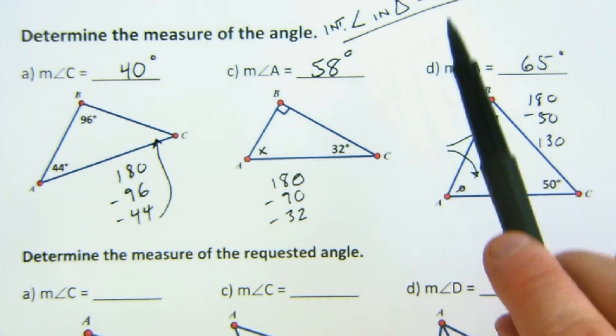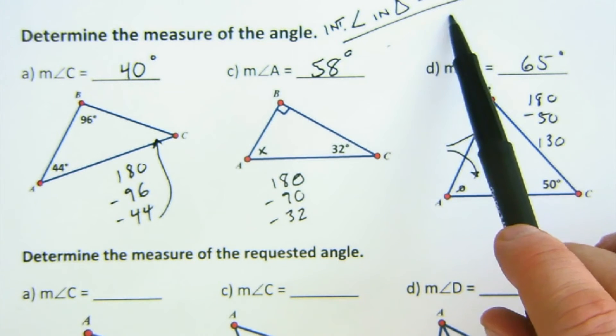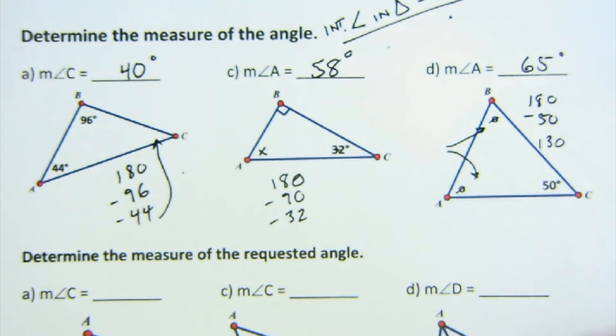So we're applying what was a little tricky to prove, but once we've proven that the angles, interior angles in the triangle equal 180, then we can just simply work that out.